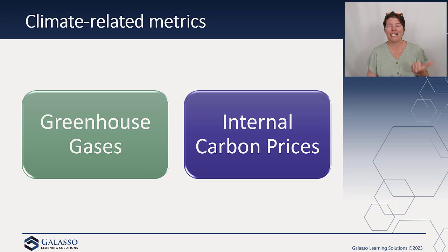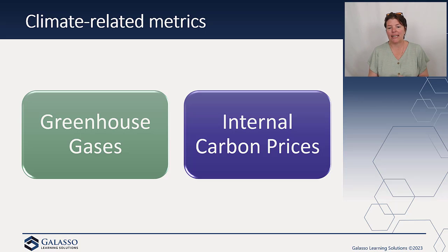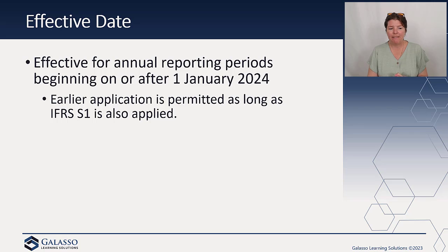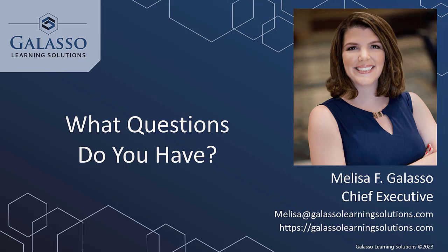Some of the more common metrics involve greenhouse gases — we have the greenhouse gas protocols for this, which is what the SEC is using — and internal carbon prices. This standard is effective for annual reporting periods beginning on or after January 1st, 2024. You can early adopt so long as you also early adopt S1, since that is the overall framework. That is our quick review of IFRS S2 climate-specific disclosures, and we're providing links in our notes so you can take a deeper dive into these various areas. Thank you for joining.